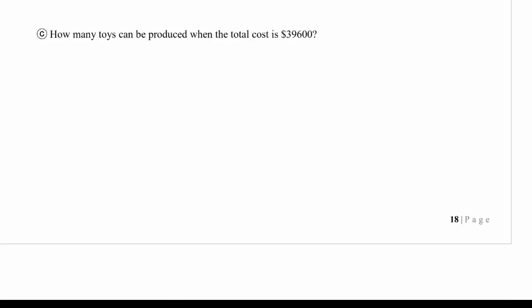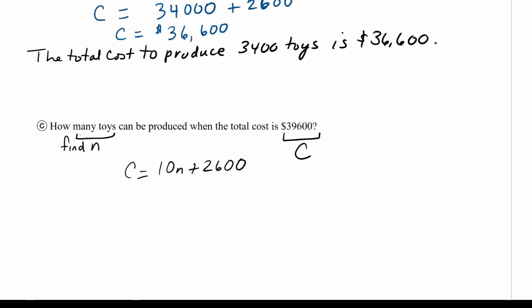Now part C is asking us how many toys can be produced when the total cost is $39,600. So this time around, we know C. So we're being asked to find n when we know the total cost C of $39,600. So let's use our equation again. And here it is. I'm going to rewrite the equation. So there was our equation. And now we're going to substitute 39,600 and we're looking for n.